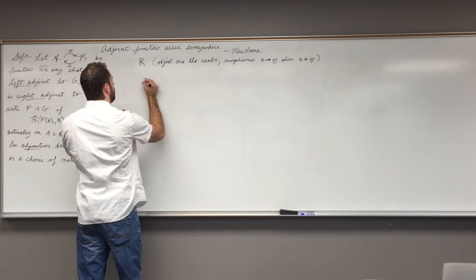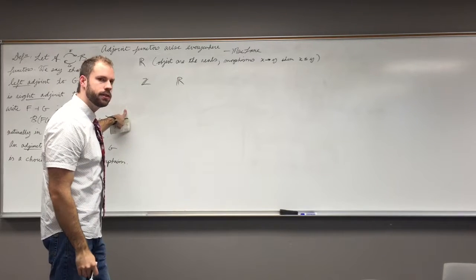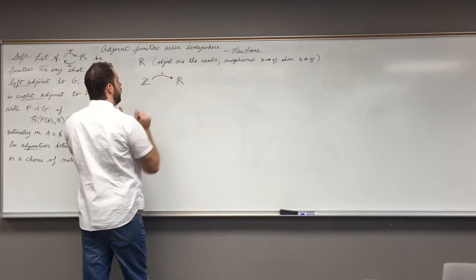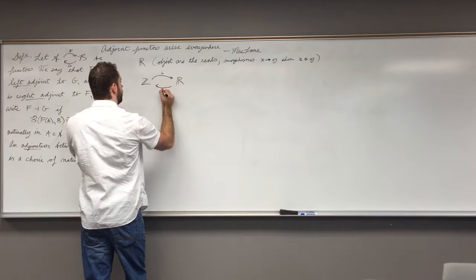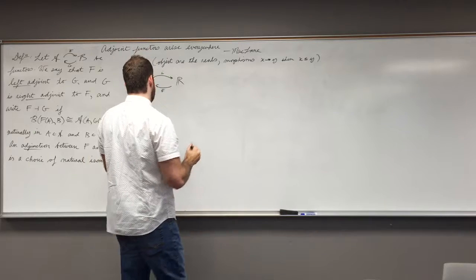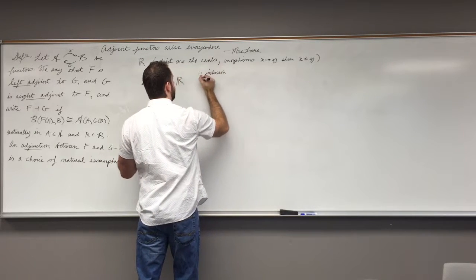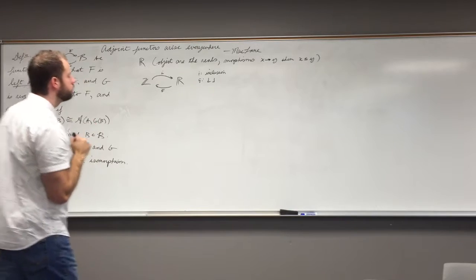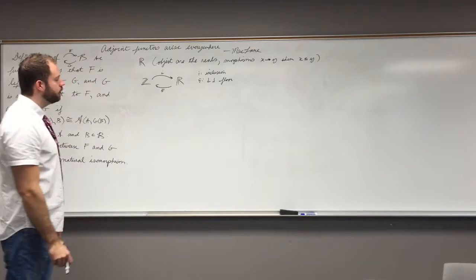So say we have the integers and the reals. So these are our two categories. We're going to have a functor, call it I for inclusion, and in the opposite direction we're going to have a functor, call it F, F for the floor function. So I is for inclusion, F is the typical floor function.